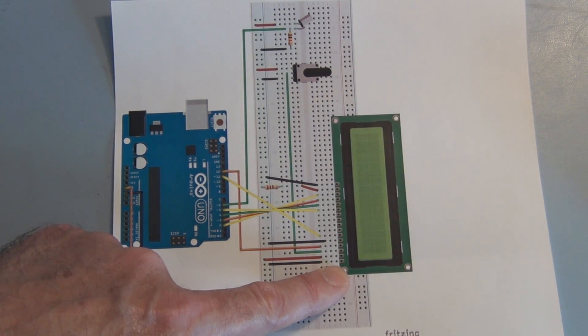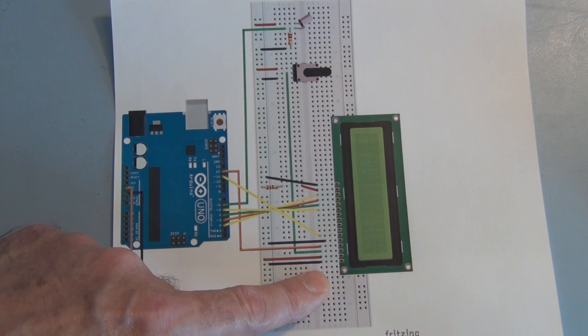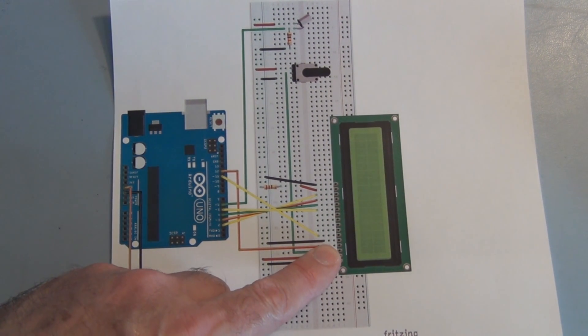Pin 1 is VSS, ground. And pin 2 is VDD, the power supply for the logic of the ICs on the LCD display. Pin 5 we're just tying to ground because we're only going to write. We're not going to read from the display.